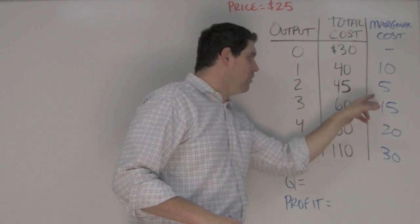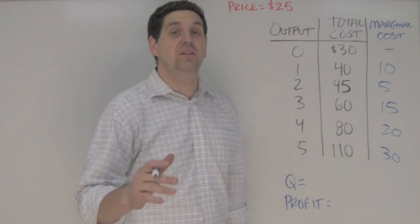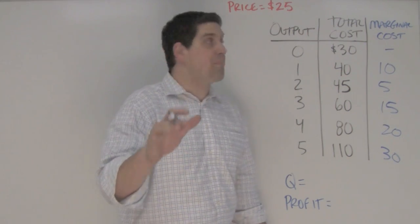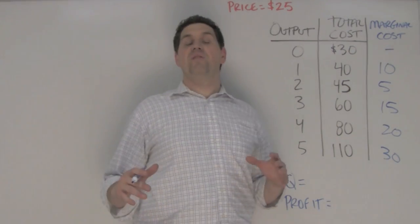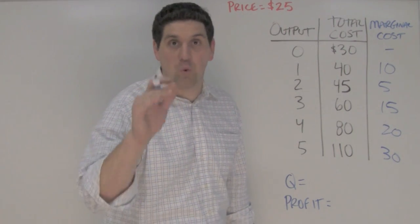As you know, the marginal cost always goes down and starts going back up. Well how do you figure out how many units to produce? The question said that this is perfect competition with a price of $25. Now in perfect competition the price is set and the firm can sell as many units as it wants at that $25.